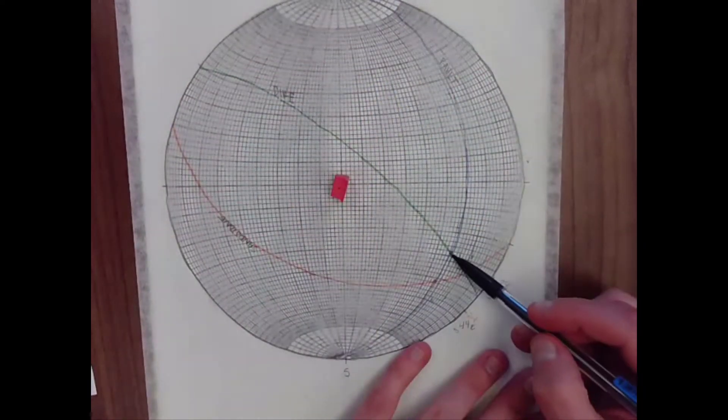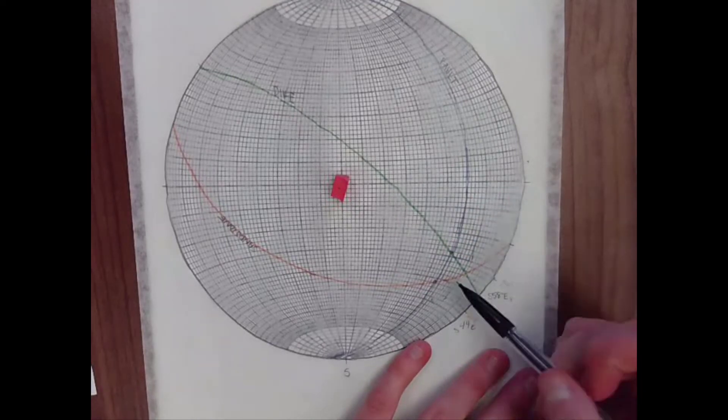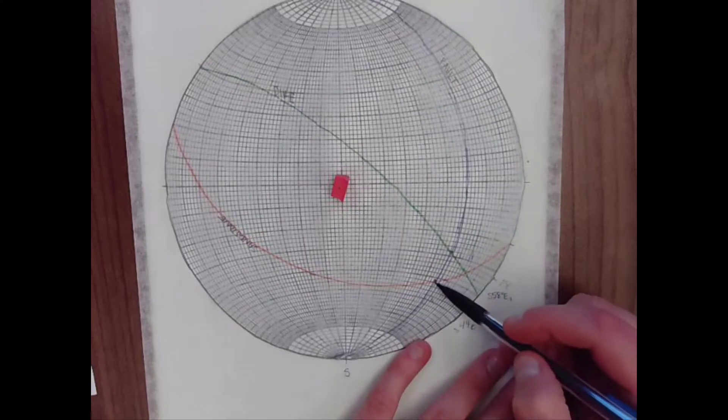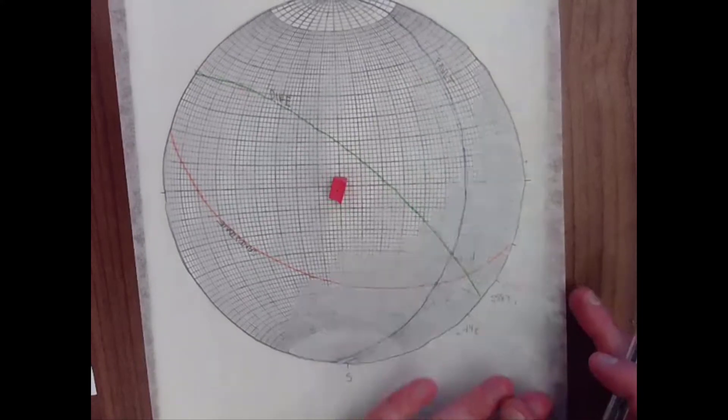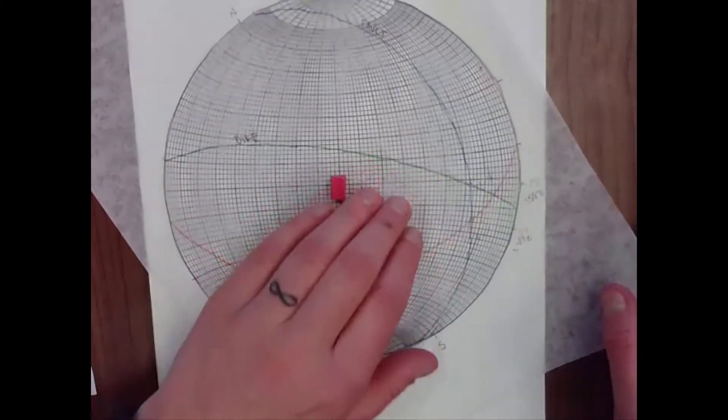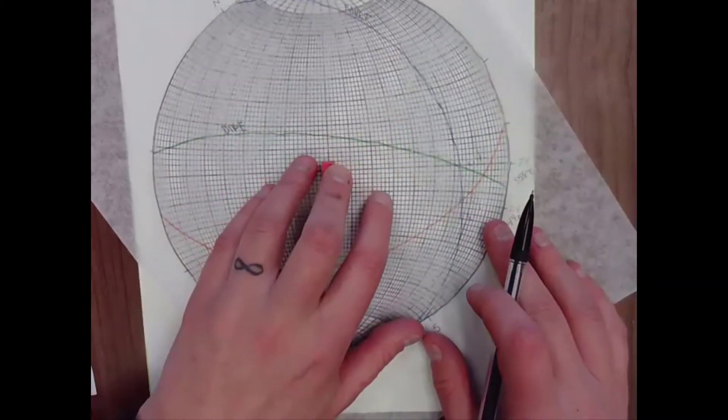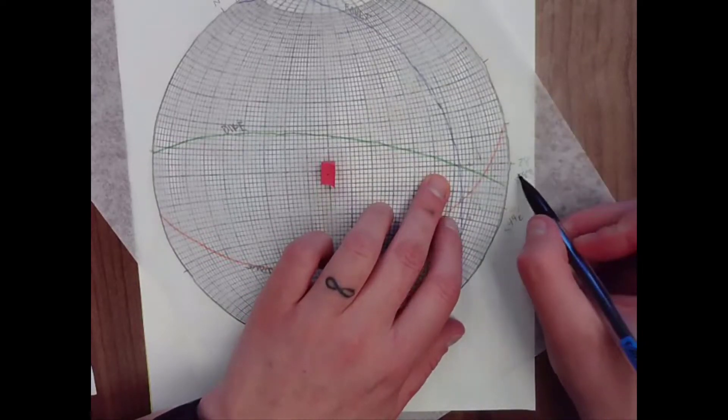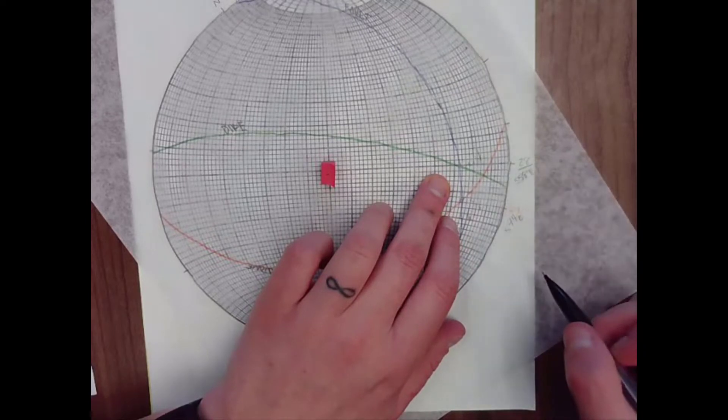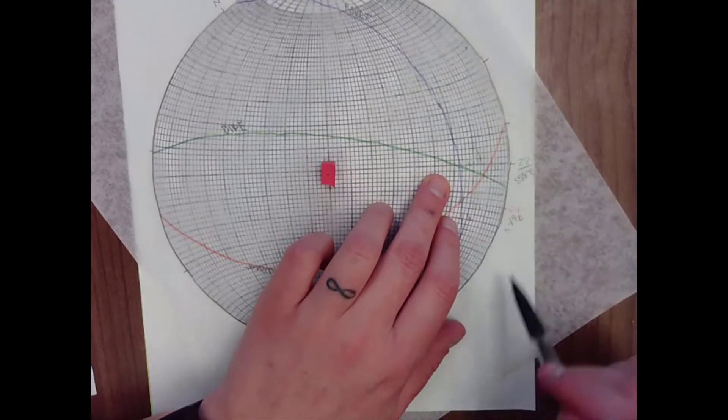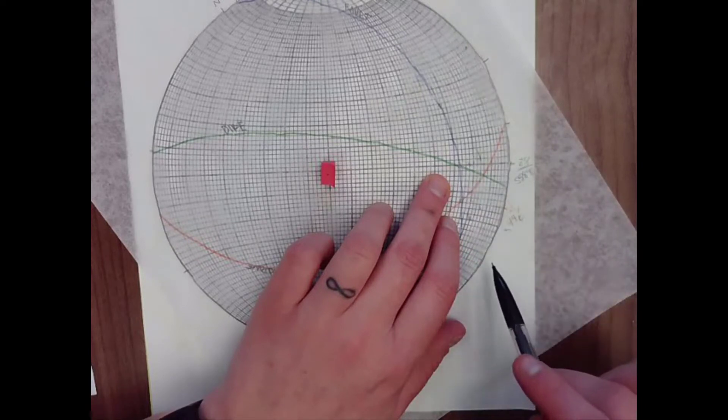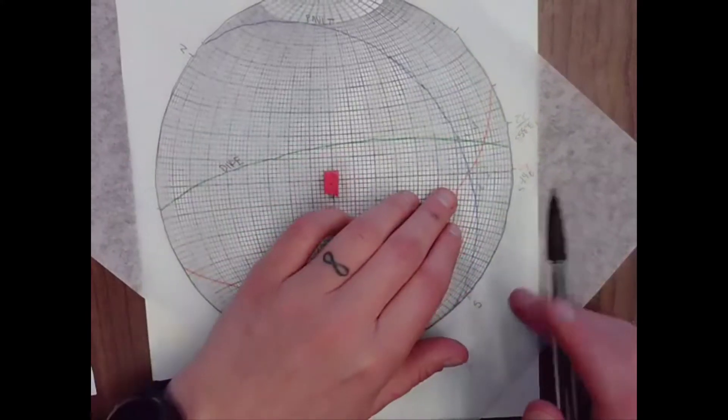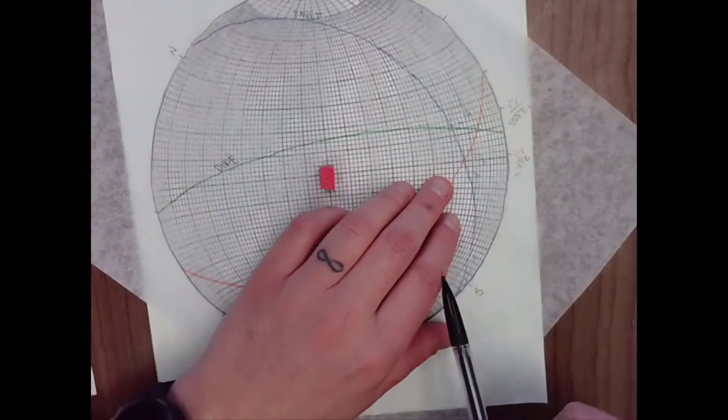What we do is we find the intersection point because that represents a line on our stereonet of the dike and the fault and of the sandstone unit and the fault. To find the trends and the plunges of those lines, we rotate each one to the horizontal. Count over to the primitive circle. That is our plunge. And I like to write my plunge in the same color as whatever that feature is that I'm working with. So here I've got a plunge of 28 degrees. And then you can go ahead and rotate up your sandstone unit intersection. Count over, you get a plunge of 24.